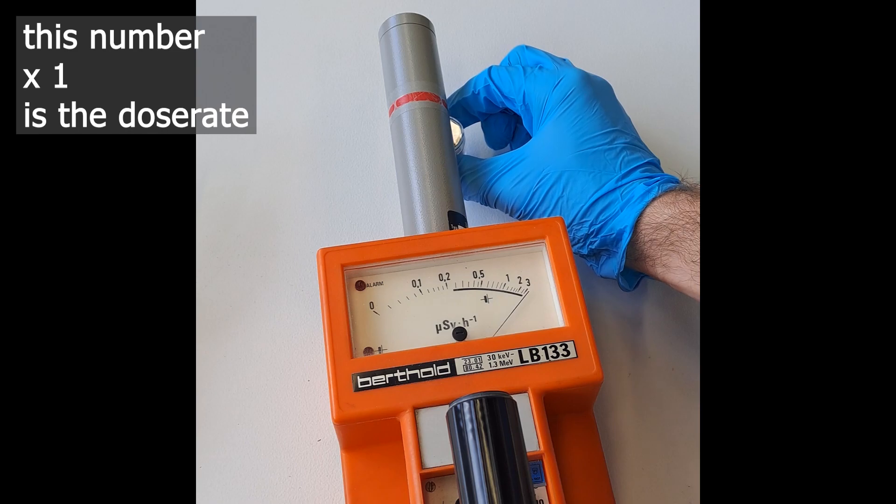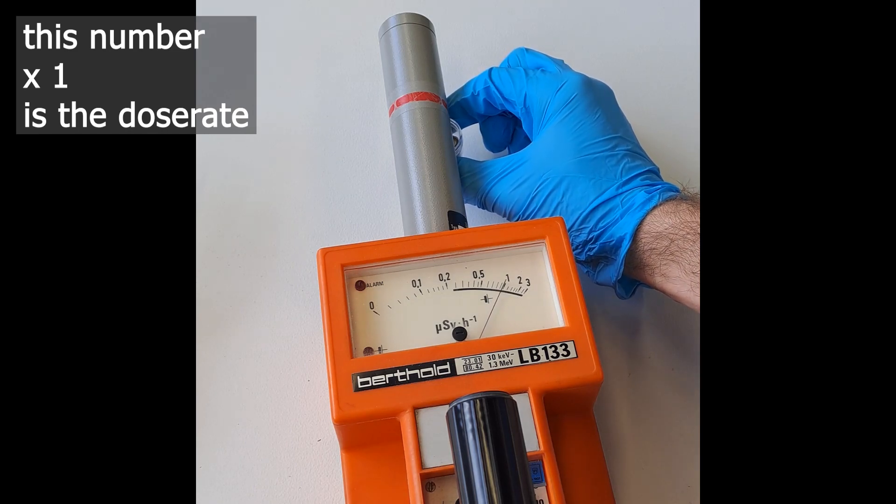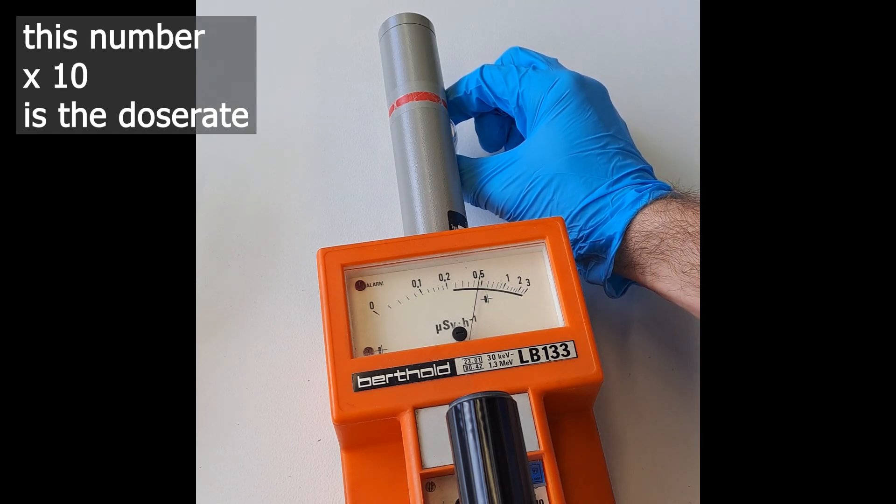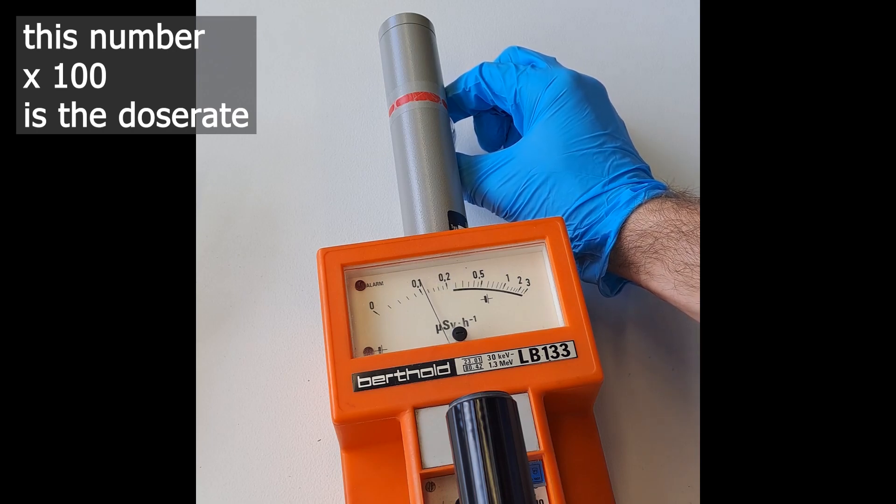A quick check with a dosimeter shows a dose rate of 9 microsieverts per hour. That's roughly 90 times the background radiation, definitely not something I would put under my pillow.